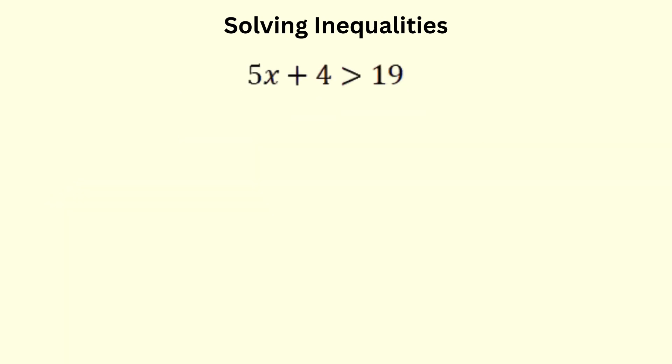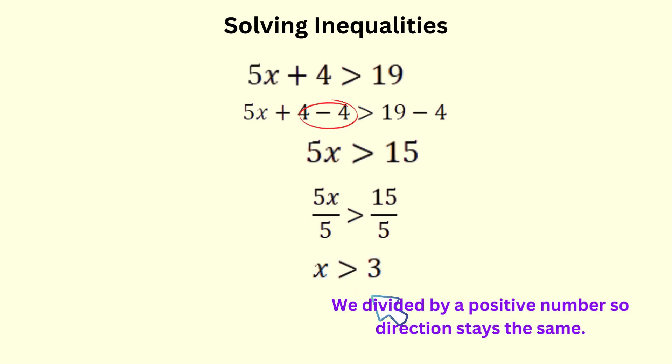We'll start with a simple example, 5x plus 4 is greater than 19. Solving inequalities follows many of the same rules as solving equations. To isolate x, we subtract 4 from both sides. This will leave us with 5x is greater than 15. To get rid of the 5 multiplied to the x, we do the opposite and divide both sides by 5. And there you have it. Our solution is x is greater than 3. The inequality symbol stays the same because we divided both sides by a positive number.